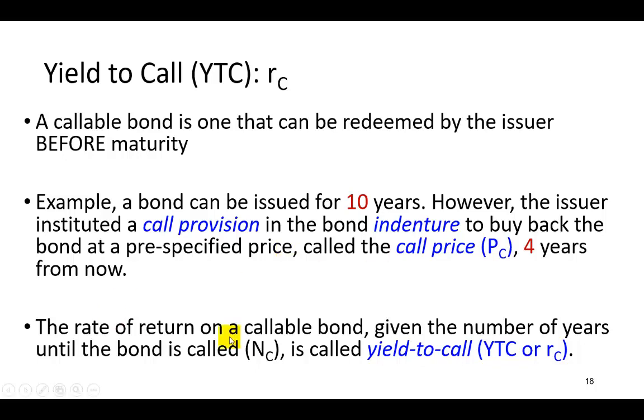Now though, the rate of return that you're going to earn on that callable bond, as I mentioned earlier, is called the yield to call. And the number of years to call, we're going to use the notation N sub C.